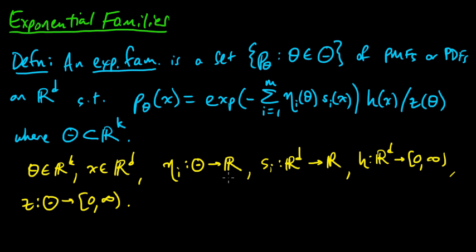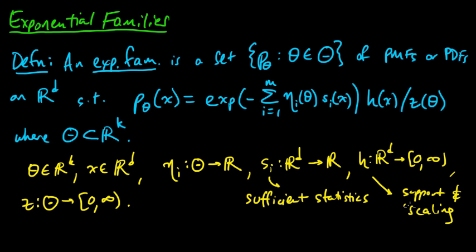These η_i are functions of the parameters. The s_i are sufficient statistics for this distribution, or rather, the vector of these is a sufficient statistic.